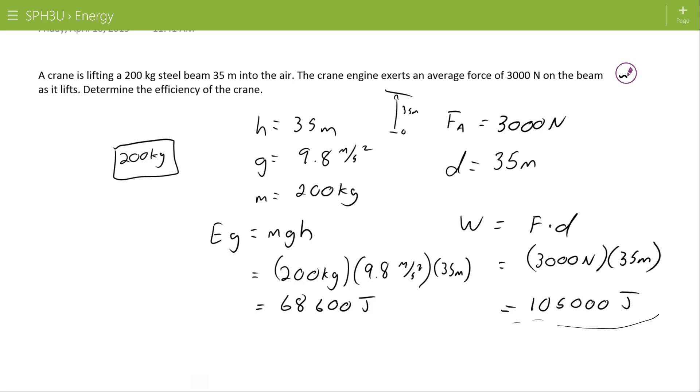So you put this much work into the system by applying that force, and the resulting work out, or what you accomplished, is you lifted the beam through the 35 meters. Where did that other energy go? Well, it could have been lost to friction. Maybe this beam swung side to side as it was lifted. There could be a variety of ways in which energy was lost in that situation.